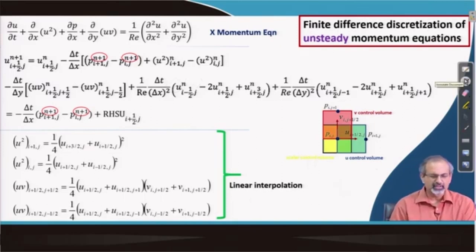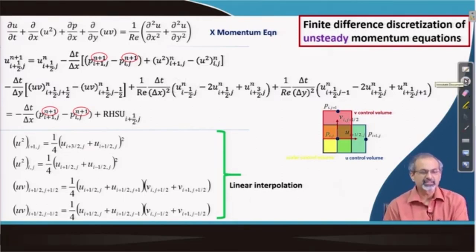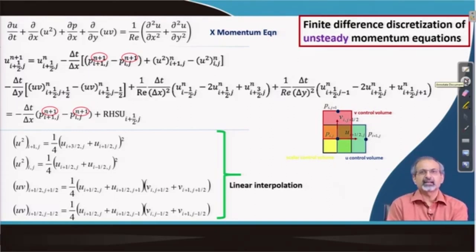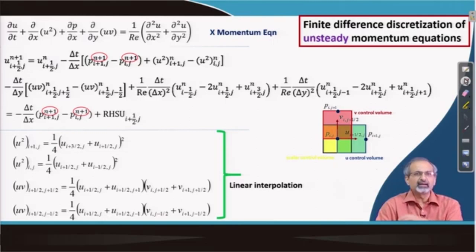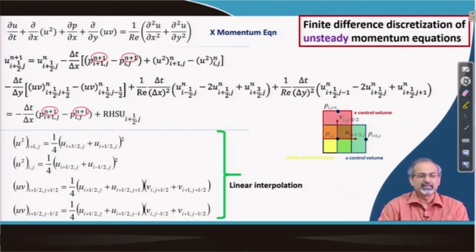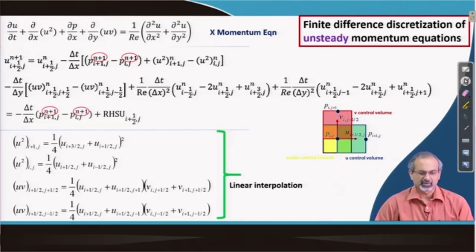One important thing to note: in the equation we have written the pressure term superscripts as n+1. That means these pressures are going to apply to the next time step — the velocities generated at the (n+1)th time step will be divergence-free, under the circumstance that a correct pressure field P^{n+1} accompanies them. That correct pressure field is what the discretized pressure Poisson equation is generating for us, which is why we assign superscript n+1 to it.